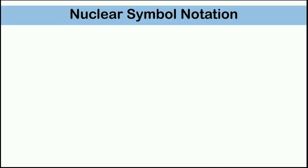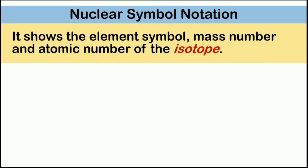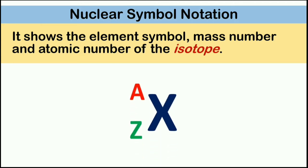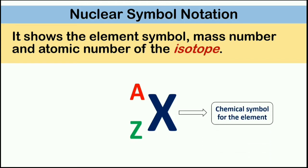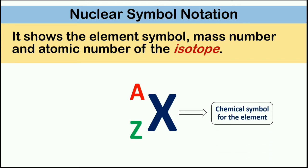Nuclear Symbol Notation. It shows the element symbol, mass number, and atomic number of the isotope. This is the format of Nuclear Symbol Notation, where X stands for the chemical symbol for the element.